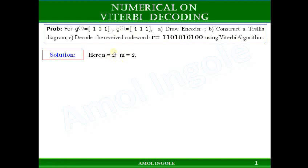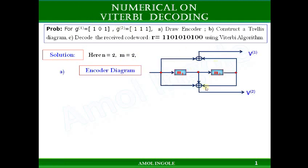From the statement you can easily identify that the number of output bits n is equal to 2, and the number of memory units required m is also equal to 2. The encoder diagram can be easily drawn using the generator sequences — see the earlier video to understand how this is drawn. To construct a trellis diagram we will first need to construct a response table; you can watch the earlier video for that as well.